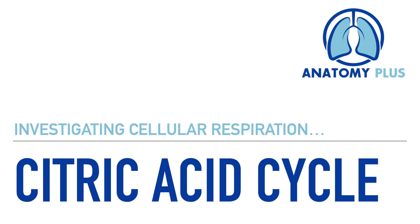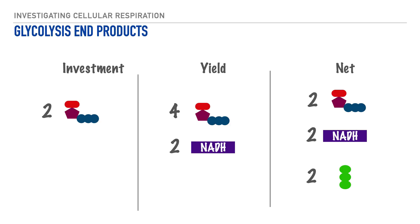Hey everyone, it's Dr. A, and in this video we'll be investigating the second component of cellular respiration: the citric acid cycle. The best place to begin is with a quick recap of the end products of its preceding series, glycolysis, where we ended up with two molecules of ATP (adenosine triphosphate), two molecules of NADH, and two pyruvate molecules.